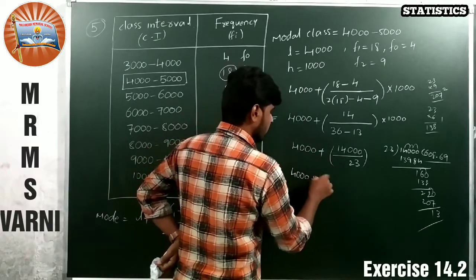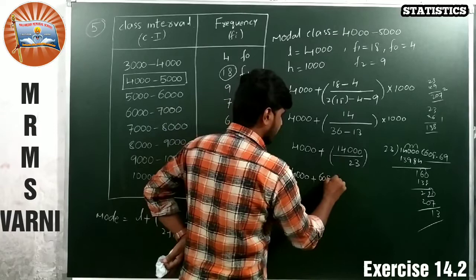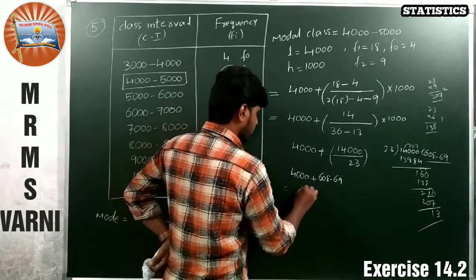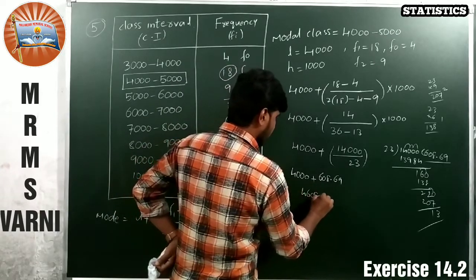4000 plus 608.69. Enough for 2 digits after decimal point. Now it becomes 4608.69.